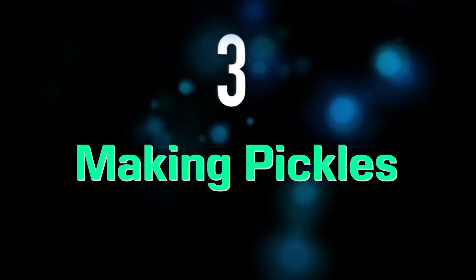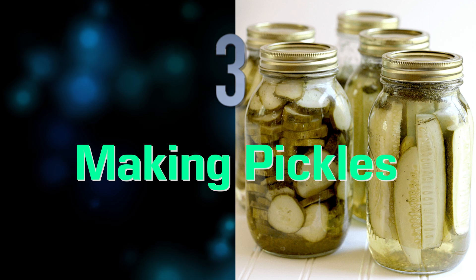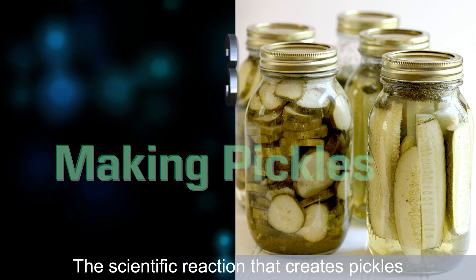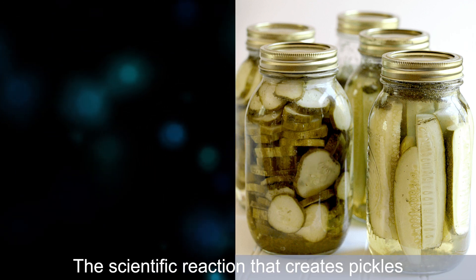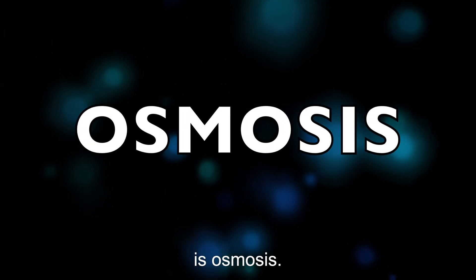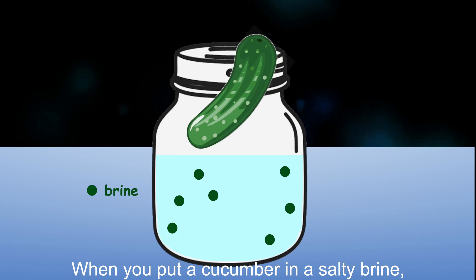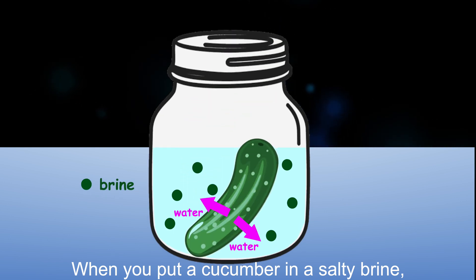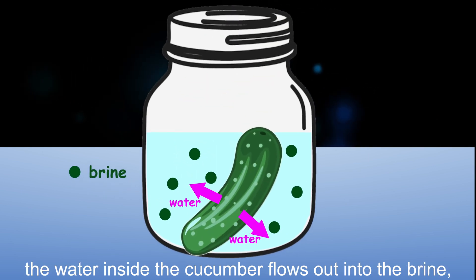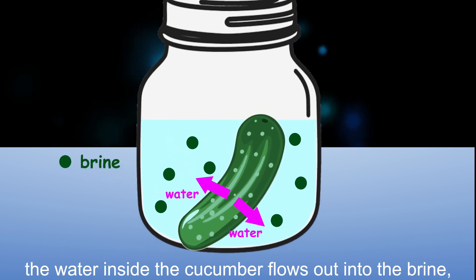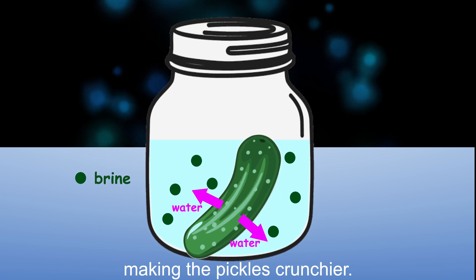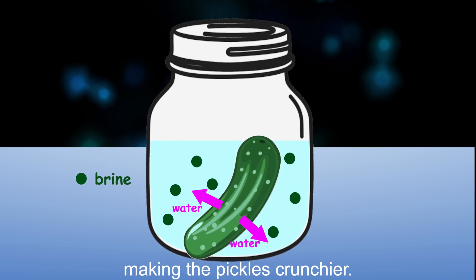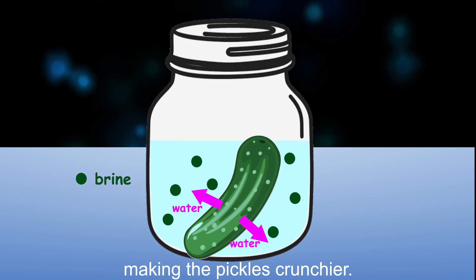Number three: making pickles. The scientific reaction that creates pickles is osmosis. When you put a cucumber in a salty brine, the water inside the cucumber flows out into the brine, making the pickles crunchier.